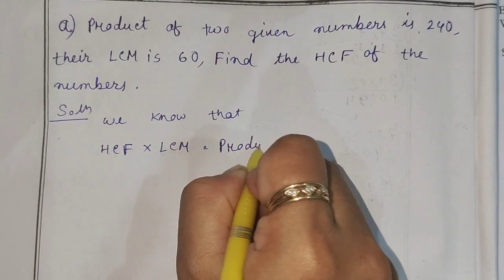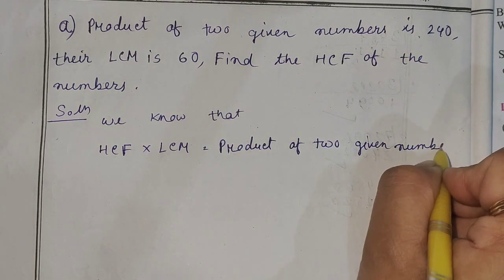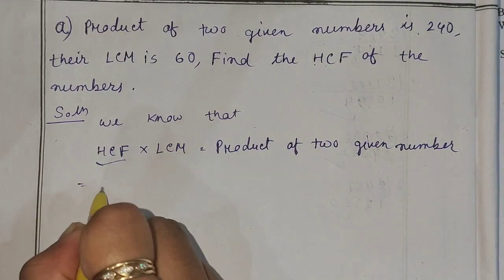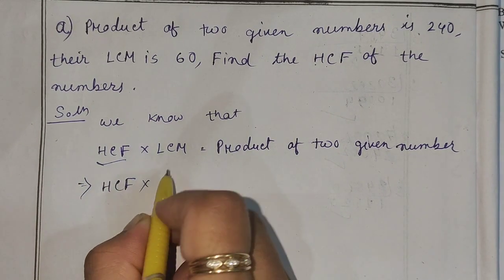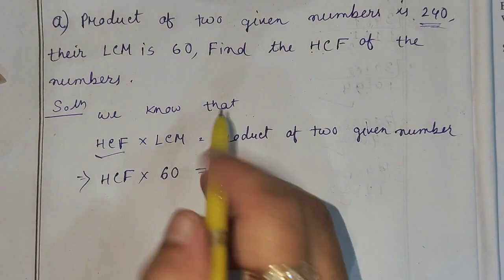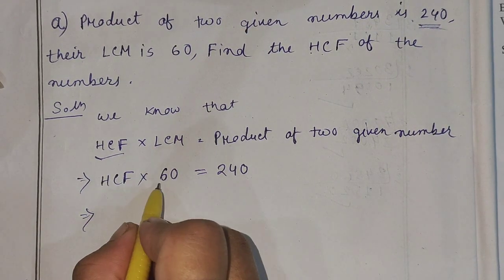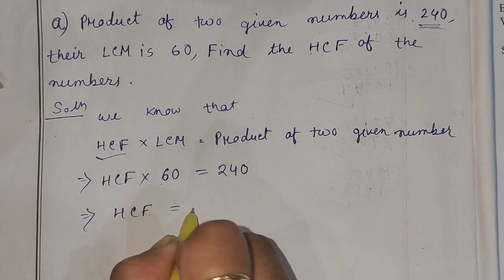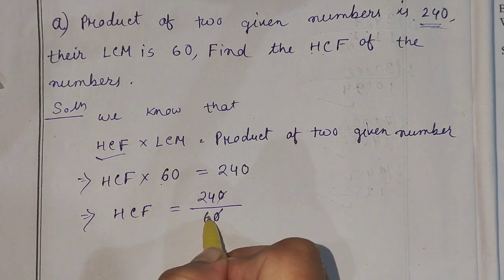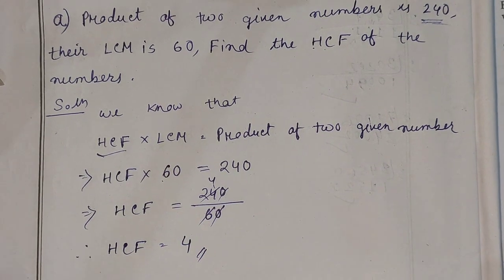We know that LCF into LCM is equal to the product of two numbers. So LCM into HCF is equal to the product of the two given numbers, which is 240. So LCM is 60, and therefore HCF equals 4. That is the answer.